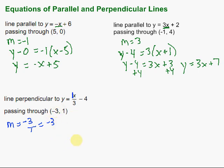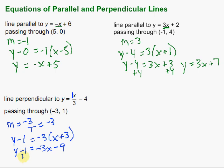We have a slope and we have a point, so we fill those into point-slope form: y minus 1 equals negative 3 times x minus negative 3, which is plus 3. Then to get slope-intercept form, distribute that negative 3 through: y minus 1 equals negative 3x, and negative 3 times 3 is negative 9. Finally, add 1 to both sides to get y by itself, and we're left with y equals negative 3x minus 8. That line is perpendicular to the original equation and passes through the point (negative 3, 1).